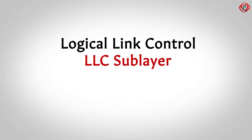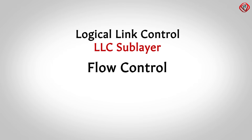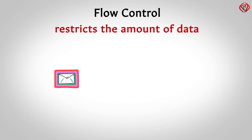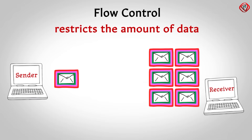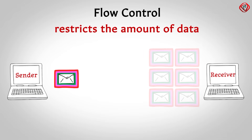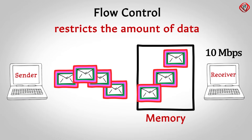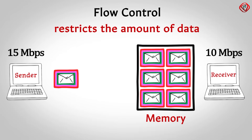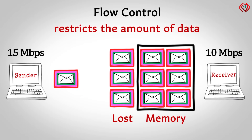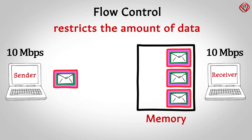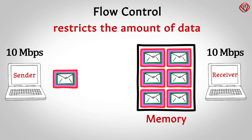The next is the LLC sublayer. It offers Flow Control and Error Control. Flow Control is a technique that restricts the amount of data that a sender can send without overwhelming the receiver. The receiving devices have a limited processing speed and limited memory to store the incoming data. If these limits are exceeded, the incoming data will be lost. To avoid this, the receiver should inform the sender to slow down the transmission rate before these limits are met. In the data link layer, Flow Control restricts the number of frames the sender can send without overwhelming the receiver.